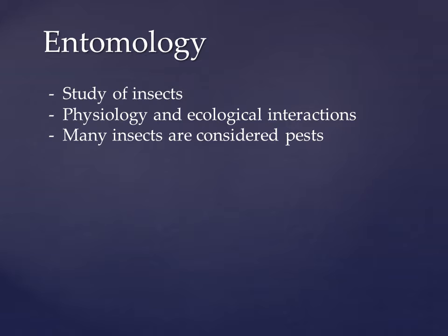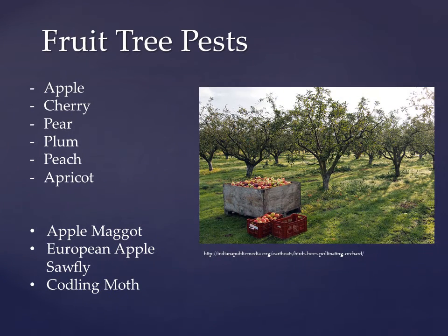A pest is considered an organism which causes nuisance to other organisms. Many insects cause damage to plant material and are therefore considered pests. Fruit trees are susceptible to pests because their fruit can be an important food source for insects. The fruit contains sugar which provides insects with the energy they need to crawl, fly, and reproduce. There are many insects that act as pests of fruit trees, including apple, cherry, pear, plum, peach, and apricot trees. In Nova Scotia, Canada, apples are a very popular crop and there are several apple orchards located throughout the province. There are also many apple tree pests that can cause problems if farmers do not take the proper precautions to ensure healthy, pest-free farms.